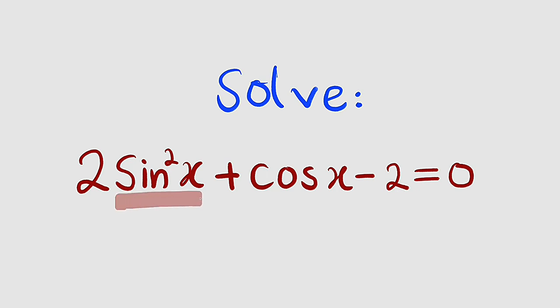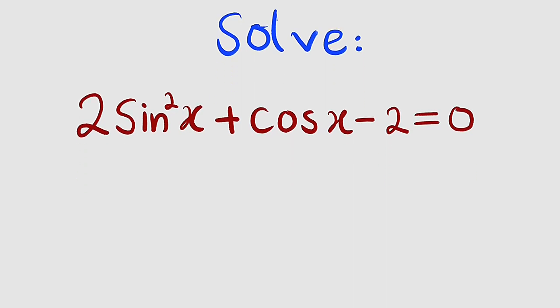We have sine squared x, but this is cosine x. I know sine squared x can be written in terms of cosine squared x. Because of that identity, sine squared x plus cosine squared x is equal to 1, which means that sine squared x is the same thing as 1 minus cosine squared x. So we are going to replace sine squared x with 1 minus cosine squared x.